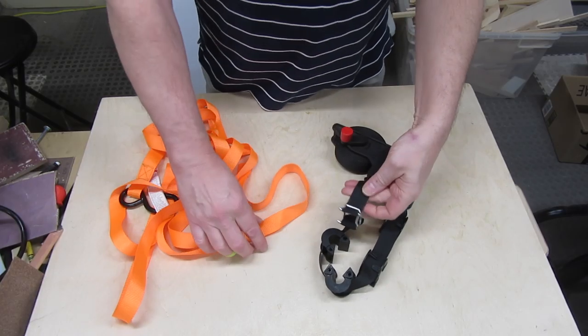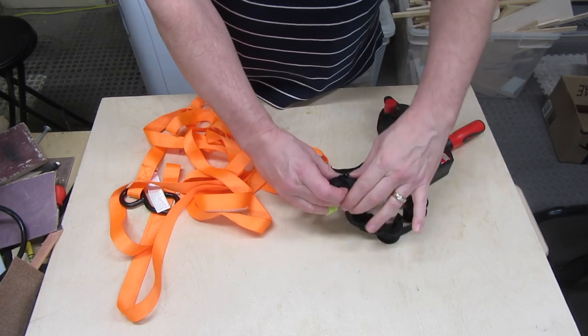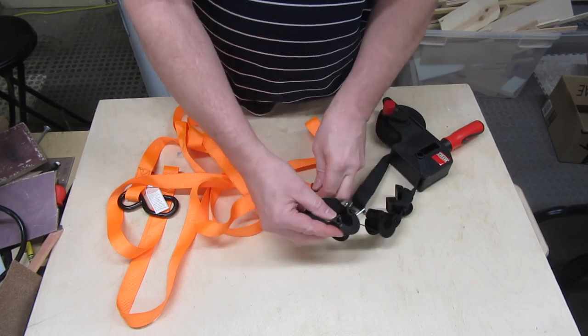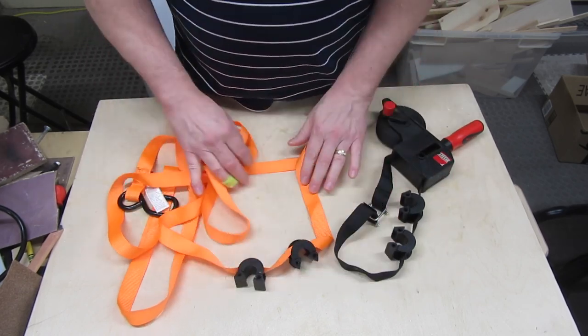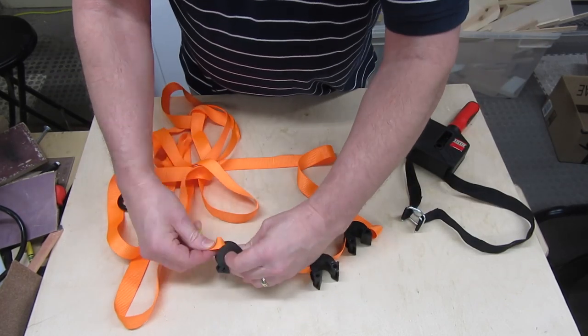It was around this time when I realized that my Bessie strap clamp uses the same size strap as the ratcheting straps. So I took the clips off the Bessie clamp and put them on one of the ratcheting straps. By the way, you can buy these clips by themselves without having to buy the entire Bessie strap clamp.